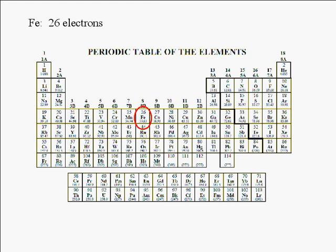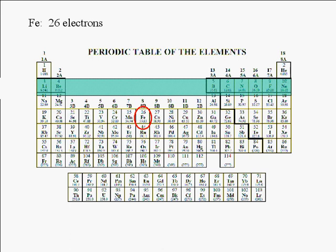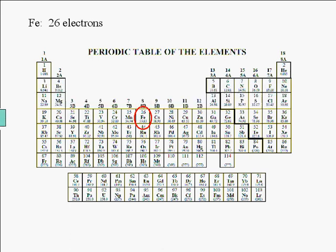Iron is in the fourth period. Here's period 1, period 2, period 3, and period 4. The noble gas that immediately precedes iron is argon. So, the electron configuration of iron has an argon core.